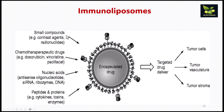Immunoliposomes are modified with specific antibodies or ligands on their surface, which facilitate targeted drug delivery to cells expressing the corresponding antigens. For example, immunoliposomes targeting HER2 receptors are used in the treatment of breast cancer. Their payloads include small compounds like contrast agents and radionuclides; chemotherapeutic drugs such as doxorubicin, vincristine, and paclitaxel; nucleic acids like antisense oligonucleotides, siRNA, ribozymes, and DNA; and peptides and proteins like cytokines, toxins, and enzymes — enabling targeted delivery to tumor cells, tumor vasculature, and tumor stroma.